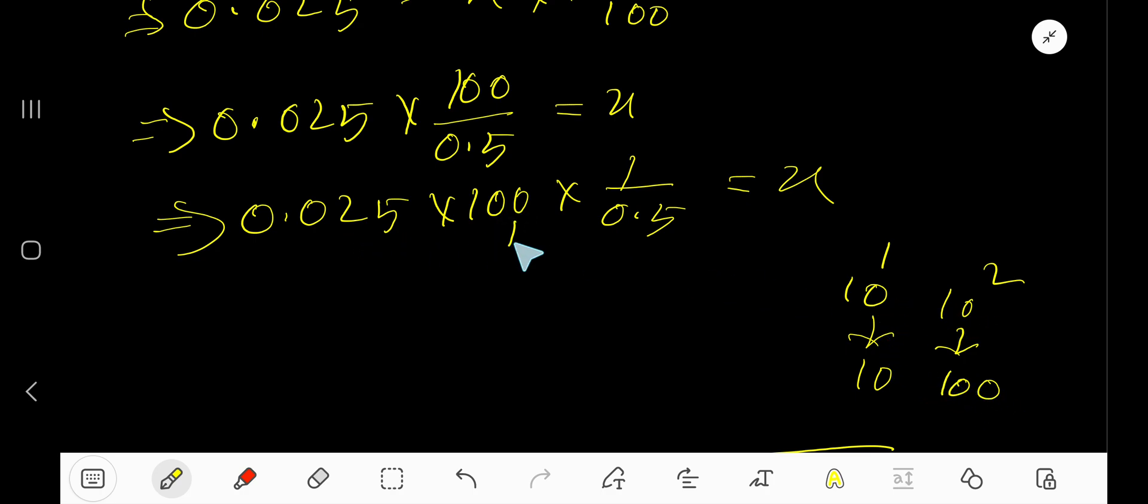To multiply this decimal by power of 10, just count the number of zeros in the power of 10 number and move the decimal from left to right equal to that number of zeros. Number of zeros is 2, so decimal point will move two places: 1, 2. So we are getting here 2.5.